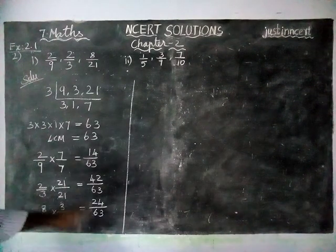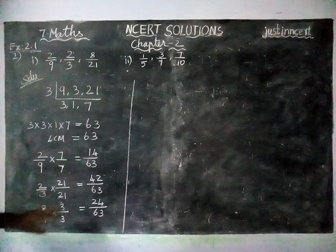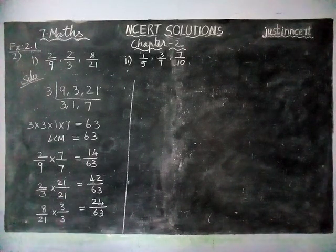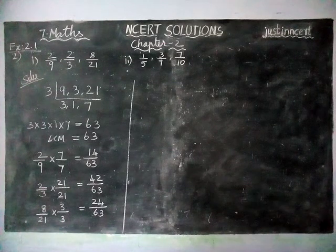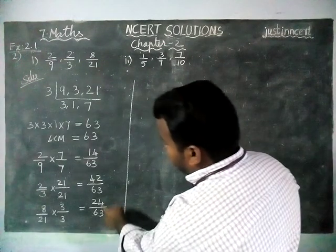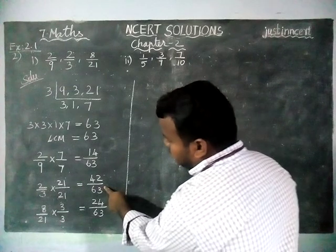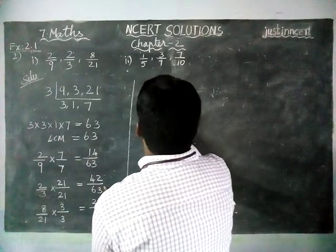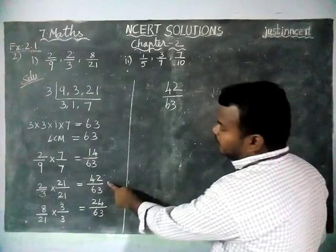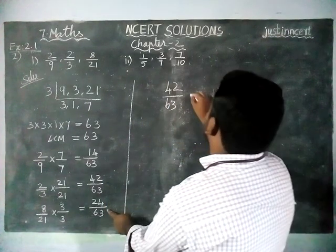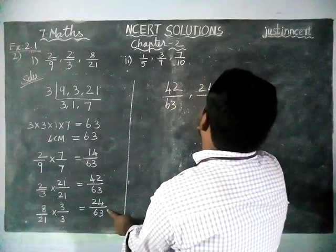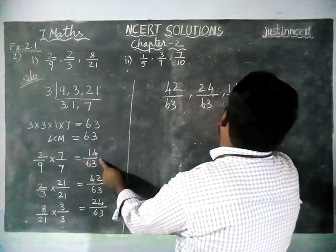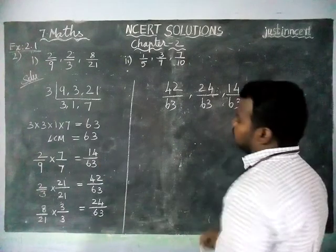Now we have all the denominators the same. We have to write it in descending order, from the highest value to smallest value. When we are comparing, 42 divided by 63 is the greatest value. Next greatest number is 24 divided by 63, then last 14 by 63.